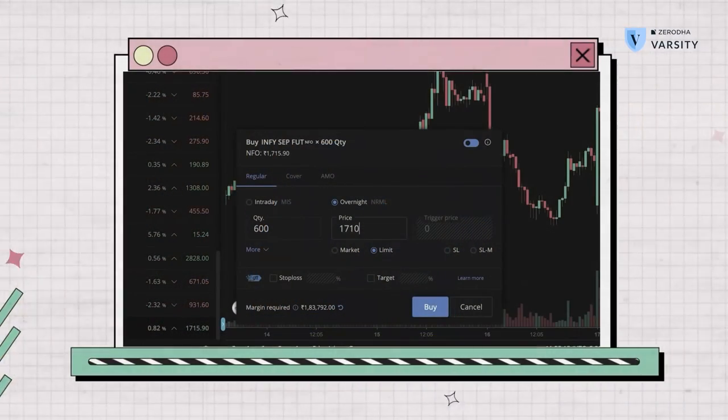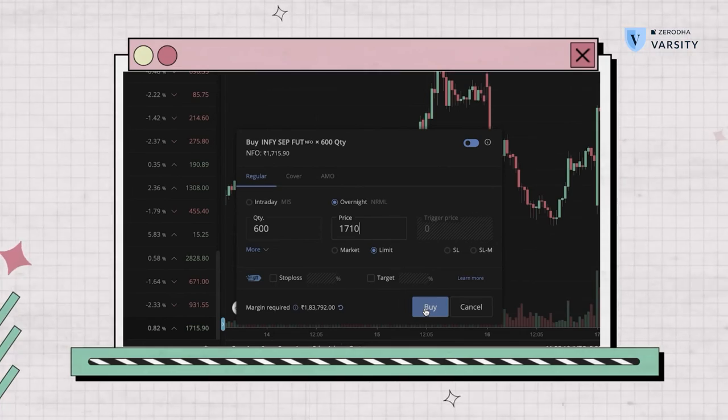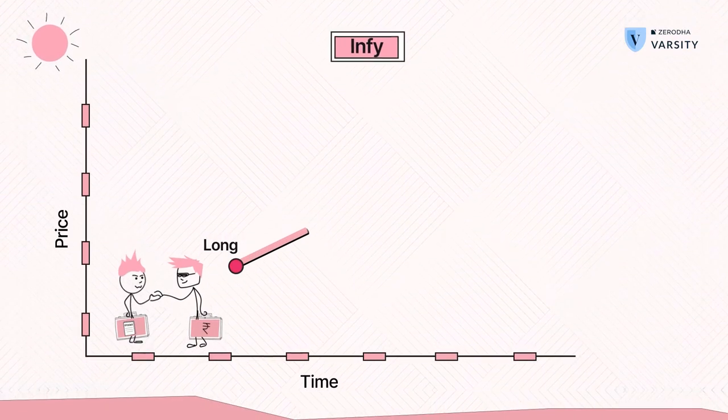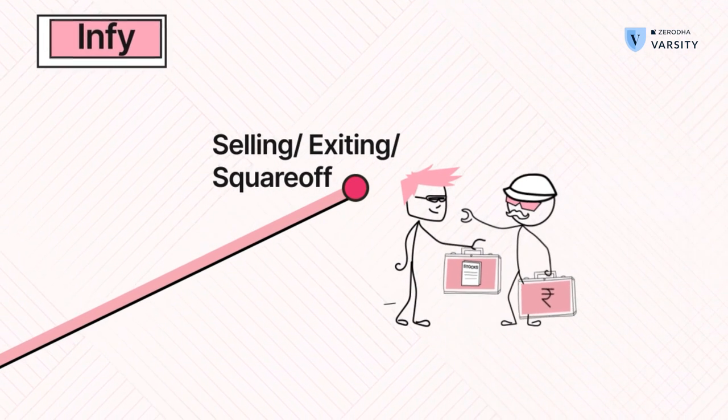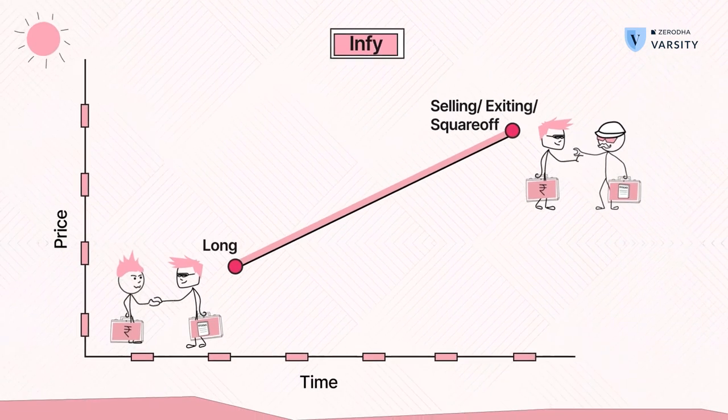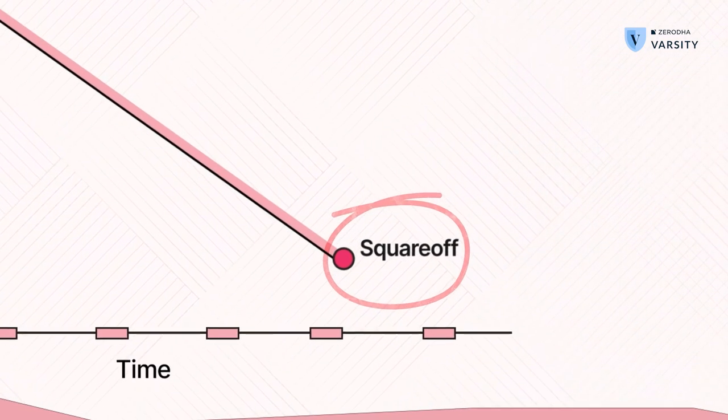One thing to note: in the earlier video, we initiated a long position by buying one lot of futures for Infosys — that is called going long. When we exited that very position, you'll have to place a sell order, and that is not shorting. That is simply exiting the long position, also called the square off. When you create a new long position by buying Infosys, you are going long. To exit, you sell that very position — it's called selling, exiting, or squaring off. However, when you initiate a fresh sell position, which I've done just now — creating Nifty September futures minus 50 quantity — that is shorting. And to exit this position, I'll have to buy one lot of Nifty, but this is not a fresh long — it's simply squaring off the existing position.